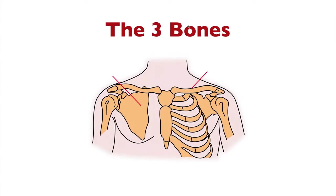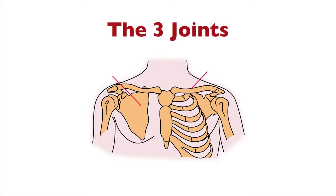First we're going to deal with the three bones of the shoulder girdle. The first bone is the clavicle, then we have the scapula, and we have the proximal humerus. Then we spoke about the three joints: the sternoclavicular joint, the acromioclavicular joint, and the glenohumeral joint.